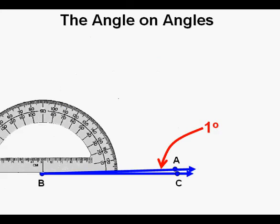Angles have different categories of names depending on their measures, and we'll use our protractor to classify them and measure them. Angle ABC here is just a small sliver of an angle, about one degree. Angles can be measured even smaller than one degree.